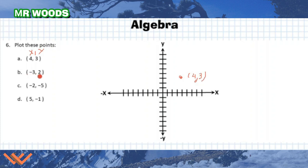Negative 3, 2. So I'm going to go in the negative direction for x. So 1, 2, 3. And then I'm going in the positive direction for y. 1, 2. I'm just going to call that b. Let's look at c. Negative 2, negative 5. So I'm going to go negative 1, negative 2, and then 1, 2, 3, 4, 5. And that's my c. And d is 5, negative 1. So I'm going to go 5 in the x direction. 1, 2, 3, 4, 5. And then negative 1 in the y direction. And I can label that d. So I have a, b, c, and d plotted.